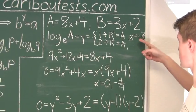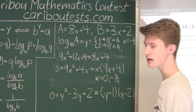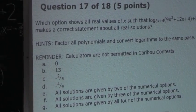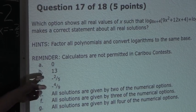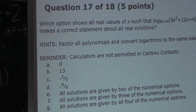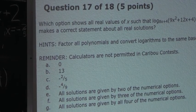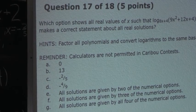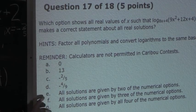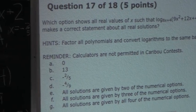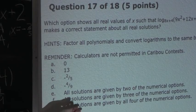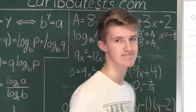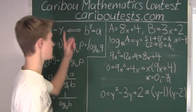So the real solutions are x = −2/5, 0, and −4/9. Looking at the options: options A through D each give only one solution; option E says two numerical options — no, we have three; option F says all solutions are given by three of the numerical options — yes, that's correct. Option G says all four — no. Therefore the answer is F. If you'd like to know more about this contest, please visit our website at cariboutests.com.